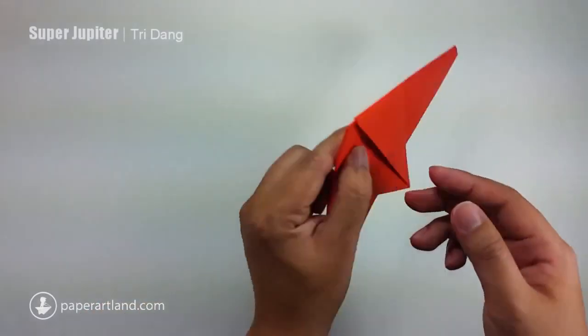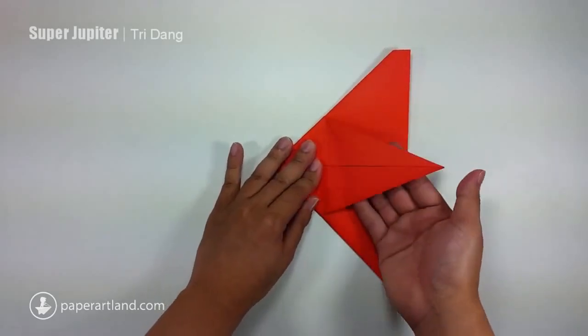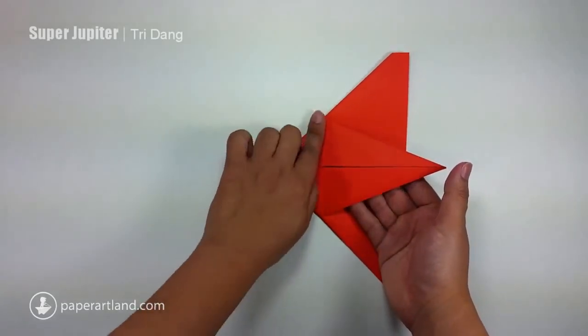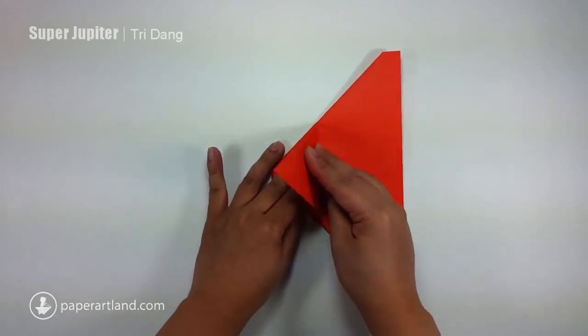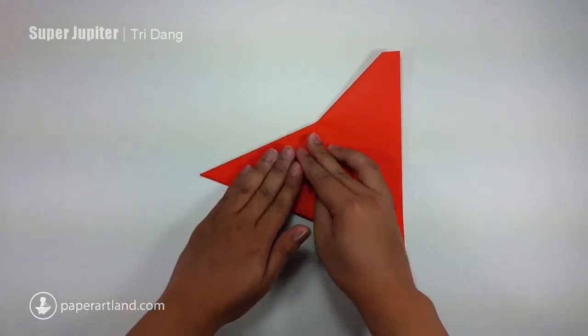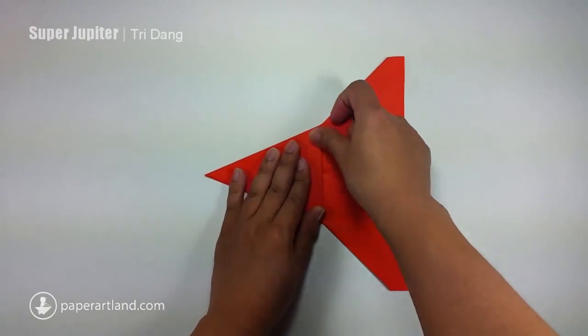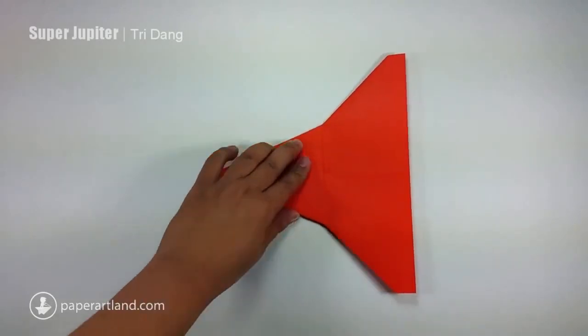Next step, I will turn the paper over and you can see this triangle shape right here. Imagine that you have a line here and this should be a triangle shape. I just fold this triangle shape up and now I fold the paper in half.